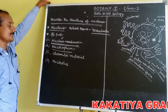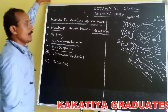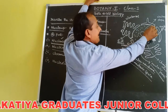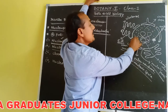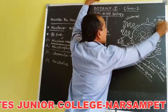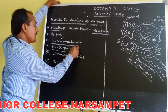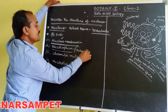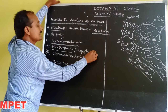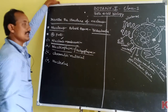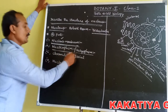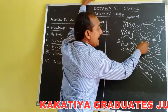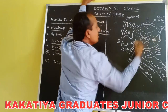Second one is nucleoplasm. A semi-solid fluid substance present inside the nucleus is called nucleoplasm or caryoplasm. It consists of chromatin material and the nucleolus.